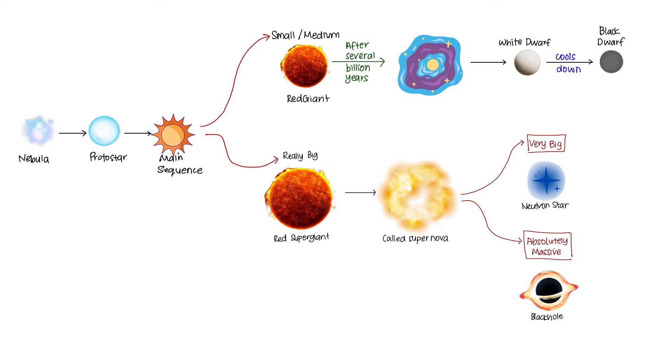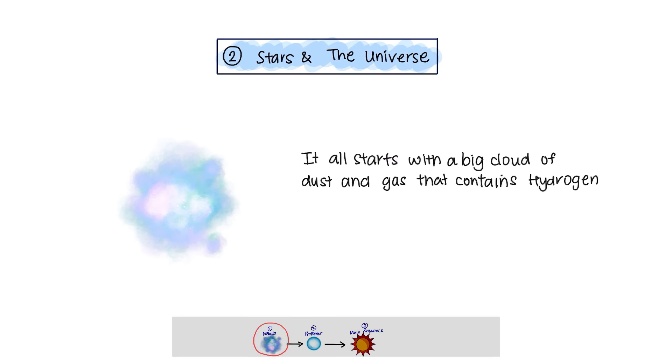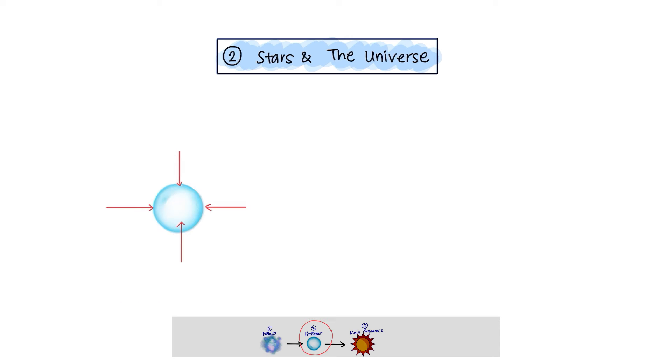Now, let's discuss how stars form, live, and die. The life cycle of a star. It all starts with a big cloud of dust and gas that contains hydrogen, which we call a nebula. The force of gravity within a nebula pulls the particles closer together until it forms a hot ball of gas, known as protostar.